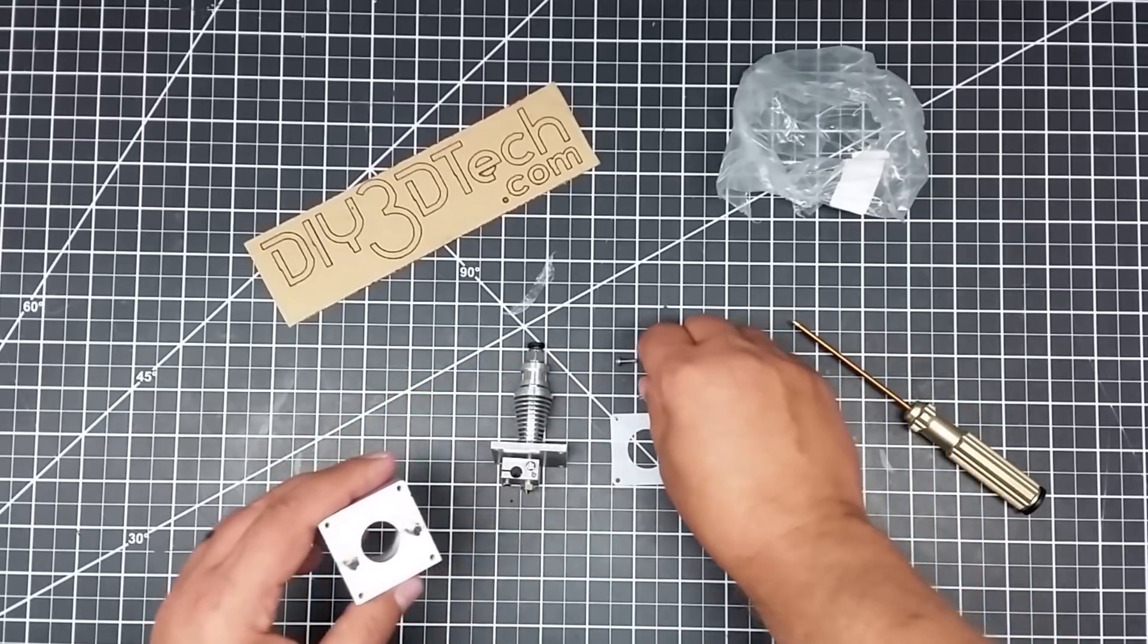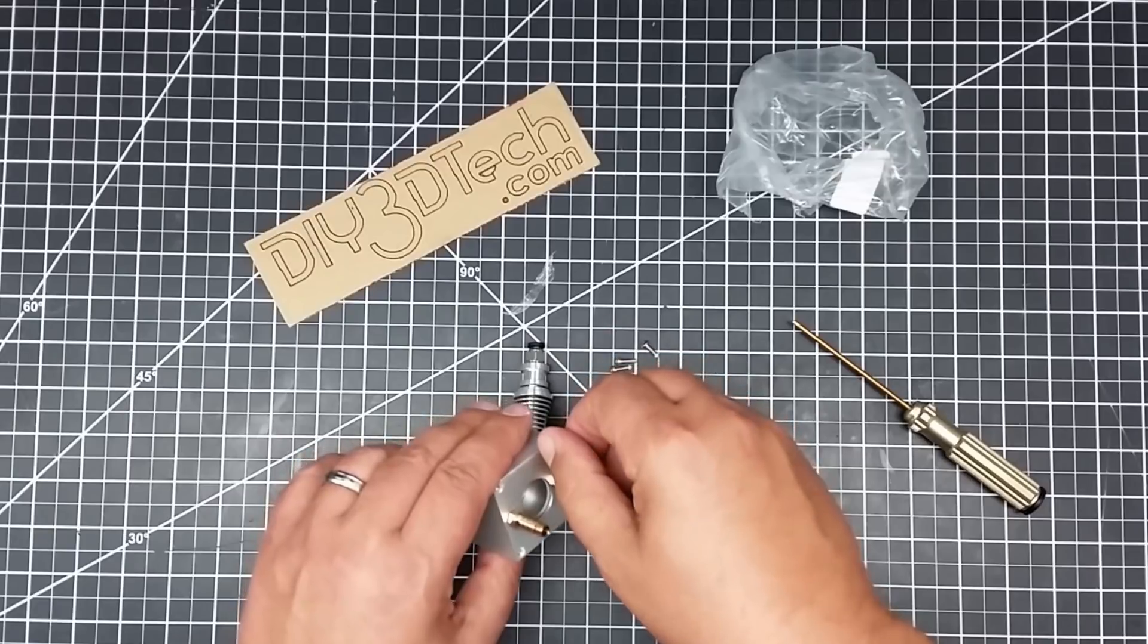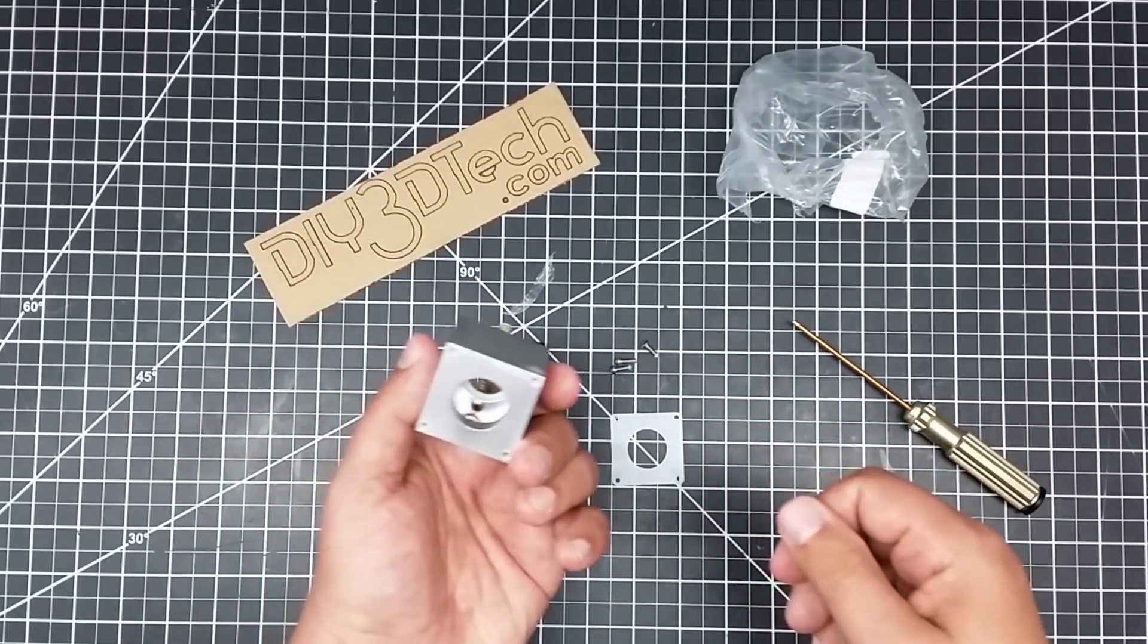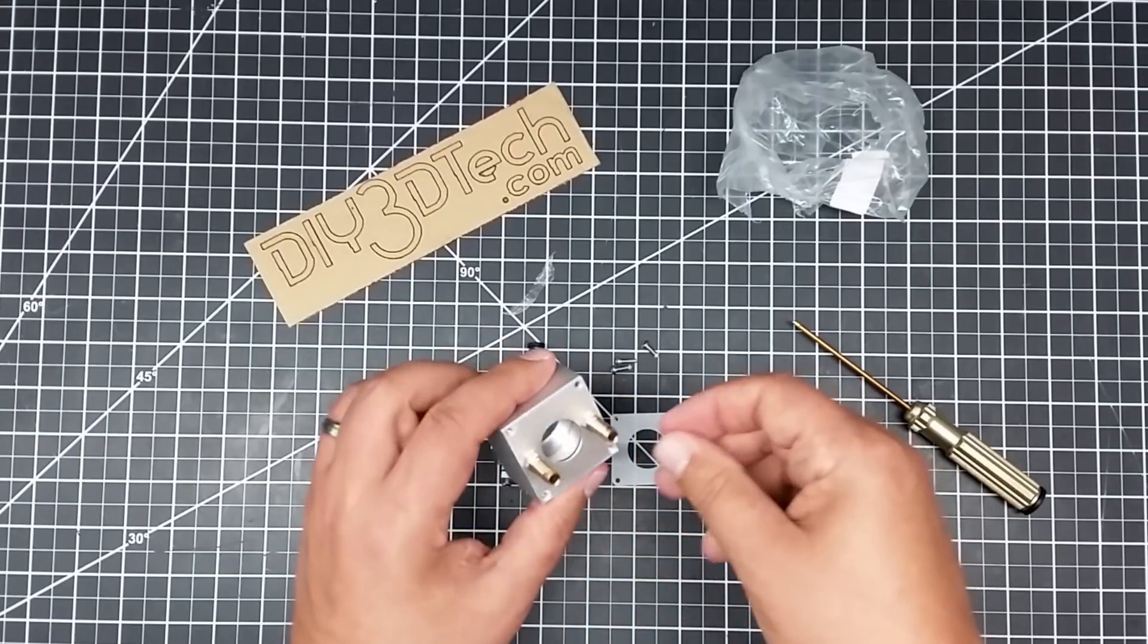But there are holes tapped in the top here, which are sort of, I think, just reciprocal of these. It doesn't look like it goes all the way through. I can't see light all the way through these.